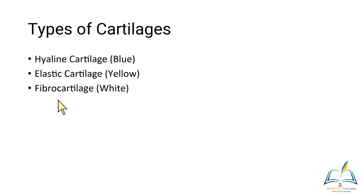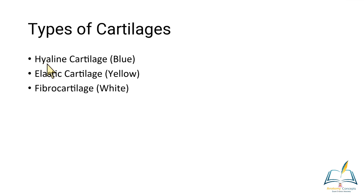Three types of cartilage are important: hyaline, elastic, and fibrocartilage. The basis of differentiation is the arrangement of cells, the interstitial matrix, and the type of fibers present. The number of cells, their arrangement pattern, cell size, fibers in the interstitial matrix, and ground substance differ among them. Grossly they appear as blue, yellow, and white — blue is hyaline cartilage, yellow is elastic cartilage, and white is fibrocartilage.